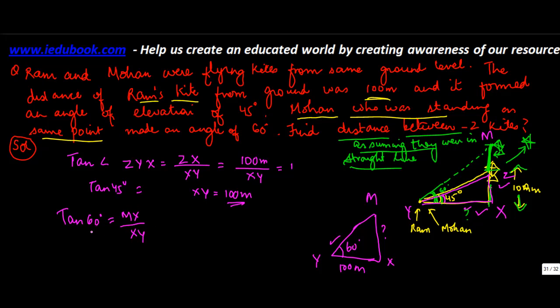Now tan 60 degrees is what? Remember the value? Root 3 is equal to mx upon xy, which is 100, or mx is equal to 100 root 3.